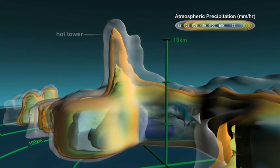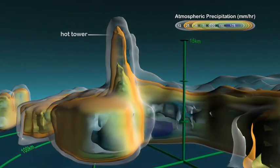These structures, called hot towers, extended higher than commercial jets fly.